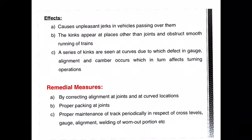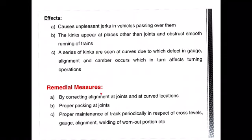When kinks in rails occur, they cause an unpleasant jerk in vehicles passing over them. Due to uneven wear of the rail head, kinks can appear at places other than joints and affect the smooth running of trains. A series of kinks at curves can cause defraction of gauge, disturb alignment, and affect cambers, making turning operations difficult. Remedial measures include correcting alignment at joints and curve locations, frequent track maintenance to check gauge, alignment and camber at curves, proper packing at joints, and periodic maintenance of cross levels, gauge alignment, and welding of worn-out portions.